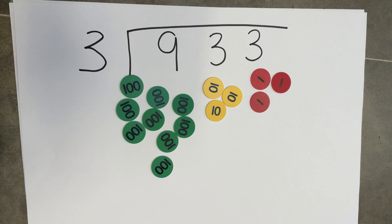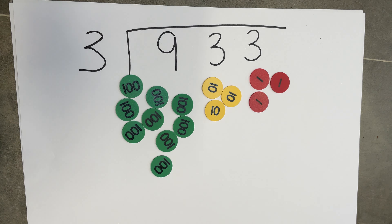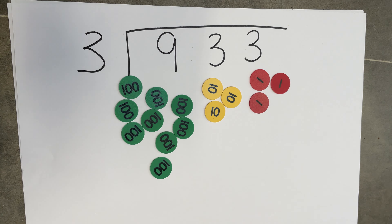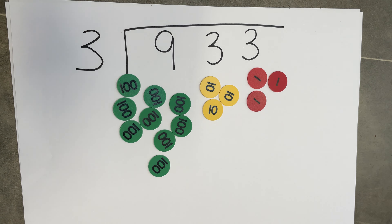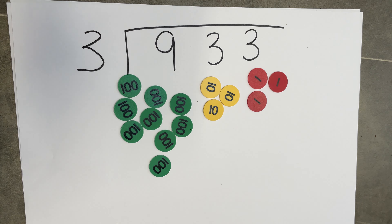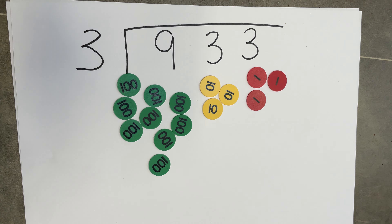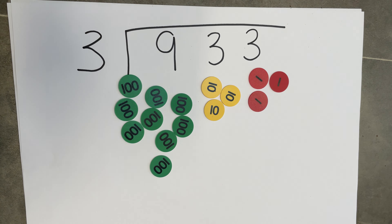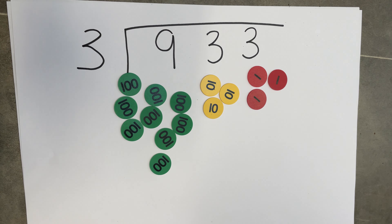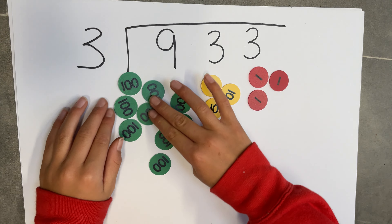I have nine hundred counters, three ten counters, and three one counters, and I'm going to arrange them into three equal groups.